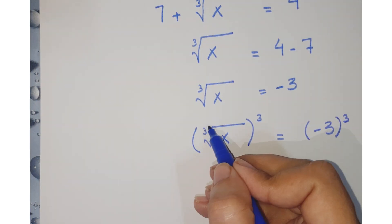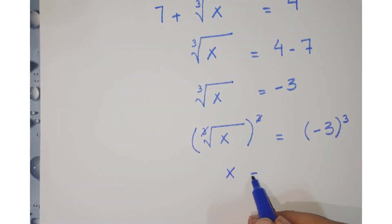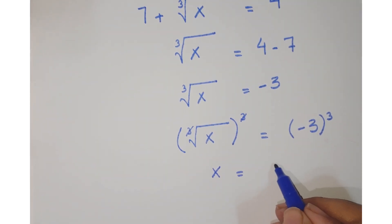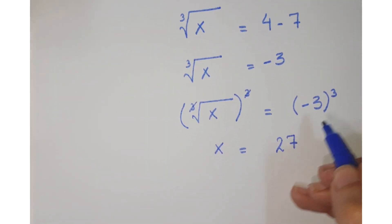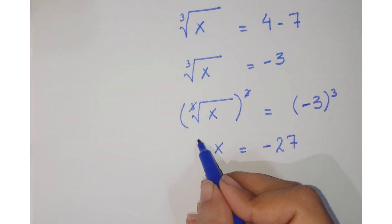This cube root and this cube are cancelled. So you have x, and the cube of 3 is 27. Since the power is odd, the sign will be minus.